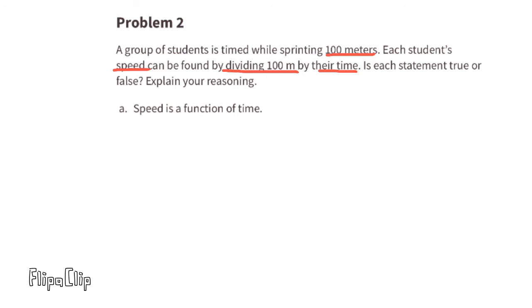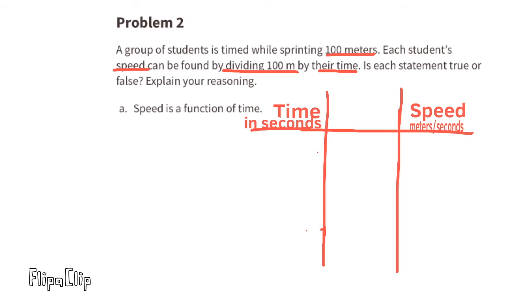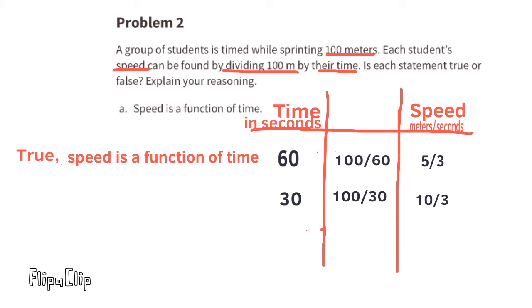A. Speed is a function of time. Let's say the time for one of the runners was 60 seconds. 100 meters divided by 60 seconds would equal 5 thirds. If the input was 60 seconds and the function was 100 divided by the input, the output would be 5 thirds meters per second. Imagine the input was 30 seconds. The function would be 100 divided by the input and the output would be 10 thirds. That would mean the speed would be 10 thirds meters per second. This is true. Speed is a function of time.